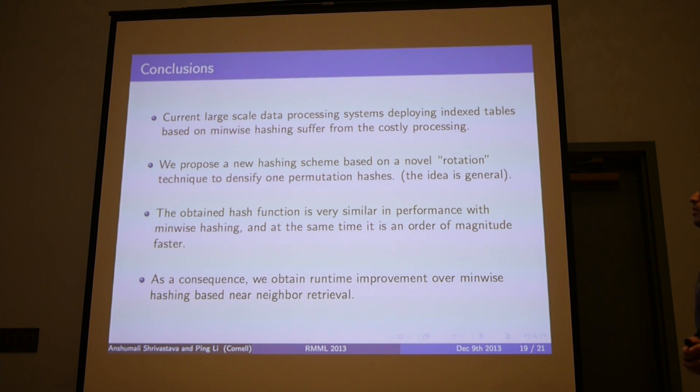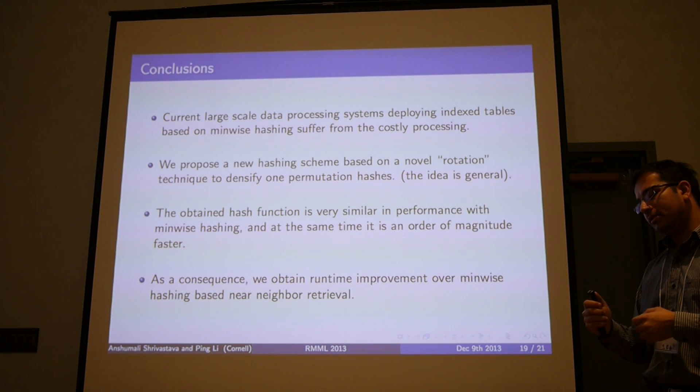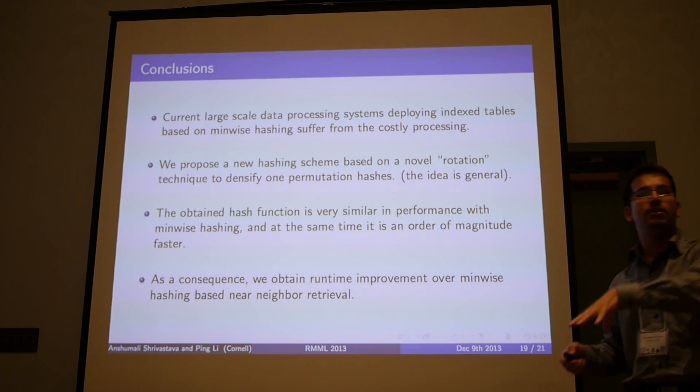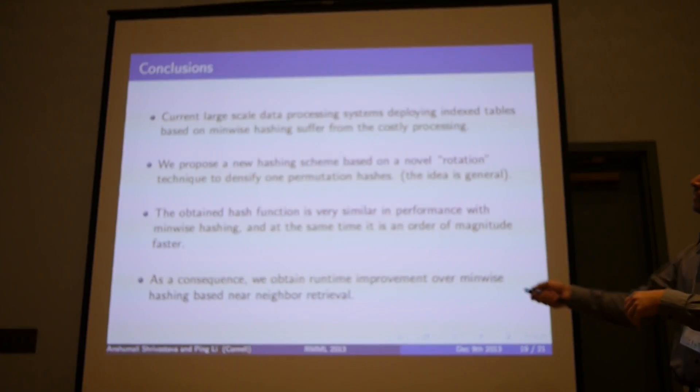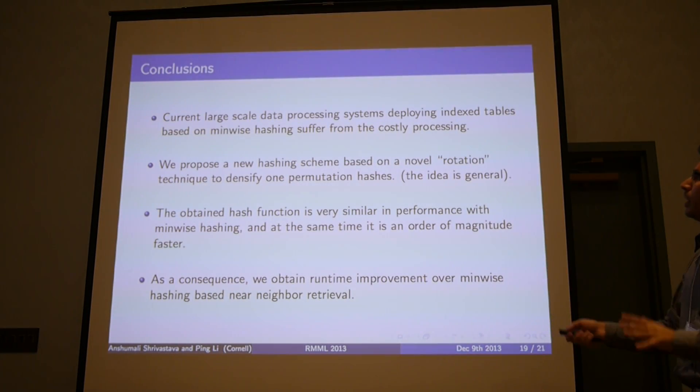The conclusion is minwise hashing is very costly, especially in the task of near-neighbor search. In the task of near-neighbor search, it's a little bit different that we don't need sparsity of sketches. One permutation hashing was sparse, but we need to densify those. The scheme which we propose densifies those sketches in an unbiased fashion. Thereby, we obtain a very fast processing scheme which very much behaves like minwise hashing, but at the same time is very cheap to compute. As a consequence, we also have a runtime improvement of minwise hashing based LSH. Thank you.